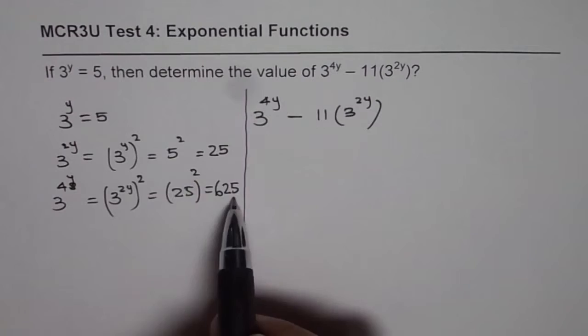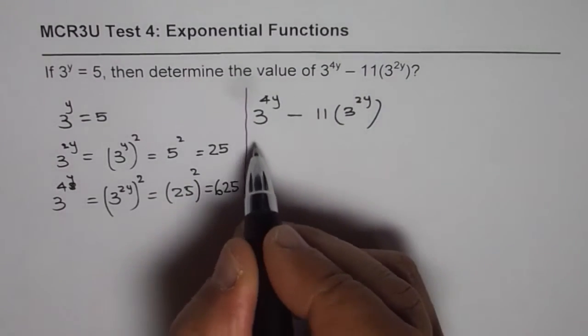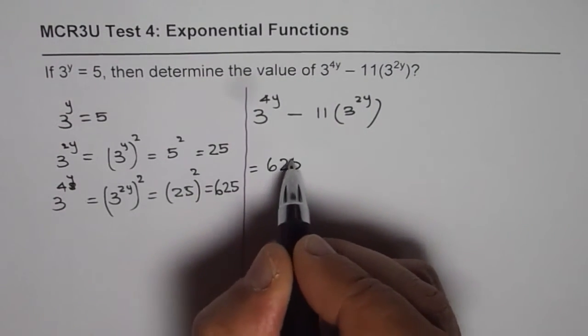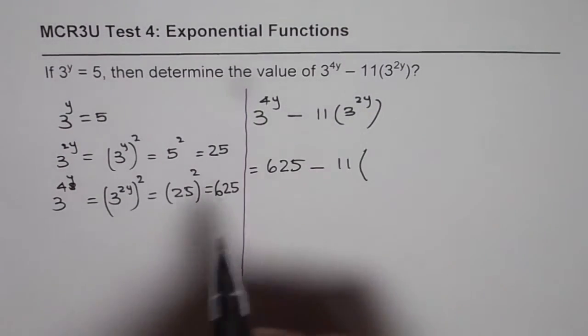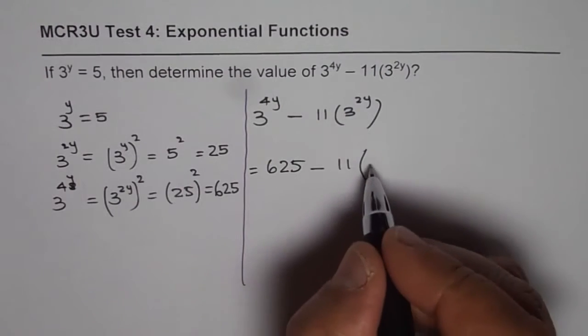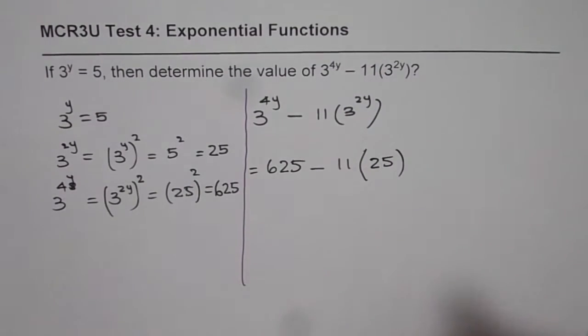3 to the power of 4y is 625. So in this expression, I'll write 625 for 3 to the power of 4y minus 11 times 3 to the power of 2y is 25, perfect.